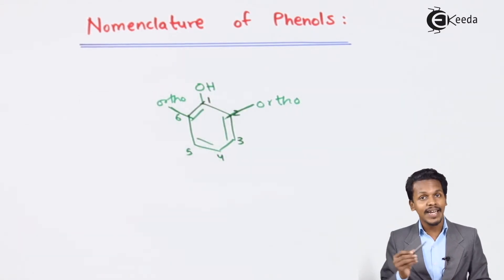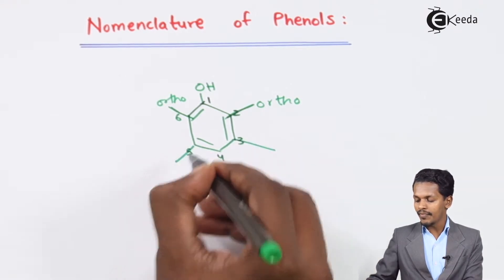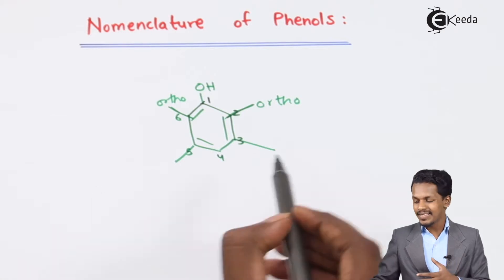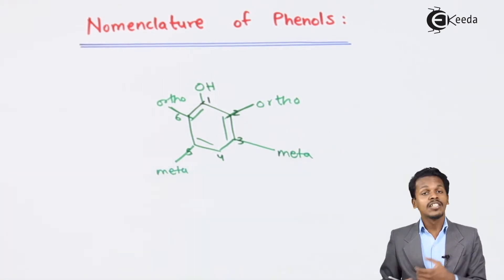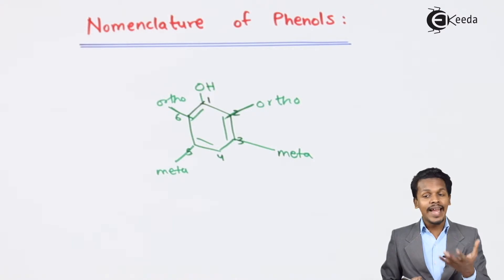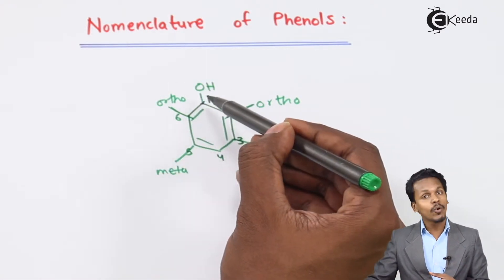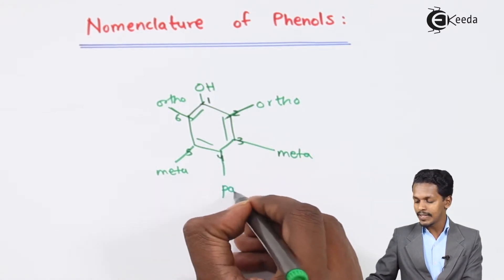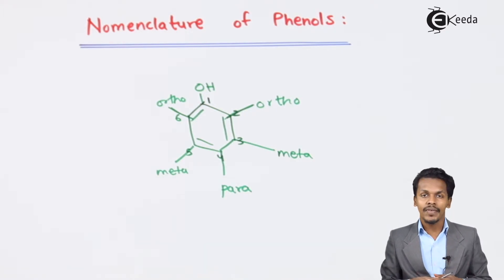With respect to where OH is attached at carbon number 1: carbon numbers 3 and 5 are the meta positions. If a substituent is attached to carbon number 4 — opposite to where OH is attached — that position is known as the para position. This was the common system for nomenclature of phenol.